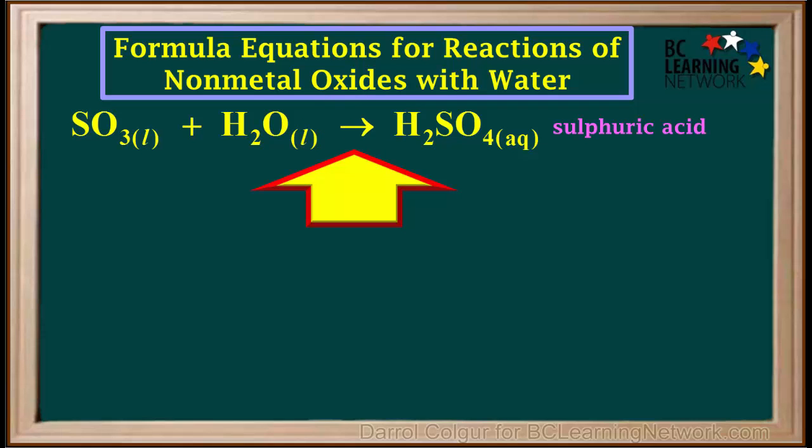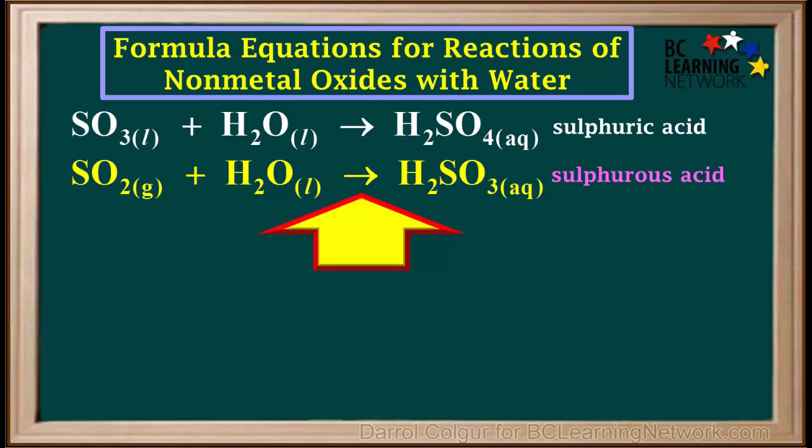The formula equation summarizing the example we just went over is sulfur trioxide, or SO3, reacts with water to produce H2SO4, sulfuric acid. Sulfuric acid is a strong acid. The other common oxide of sulfur, sulfur dioxide, SO2, reacts with water to produce H2SO3, sulfurous acid. Sulfurous acid is a weak acid.